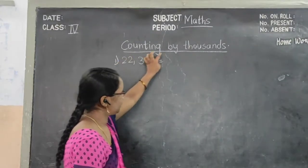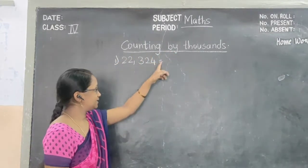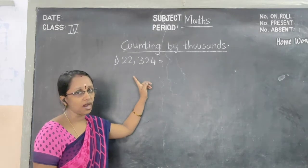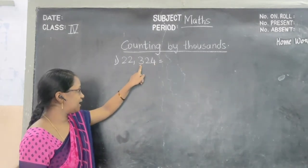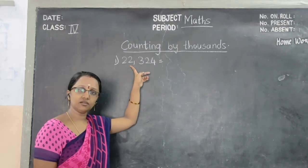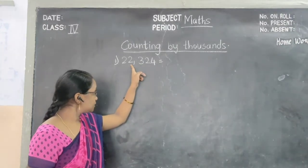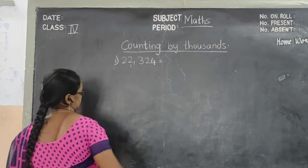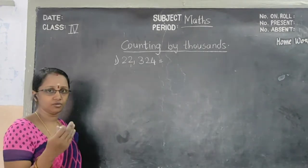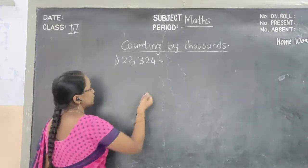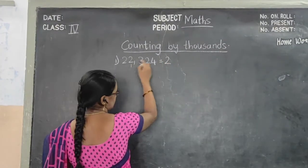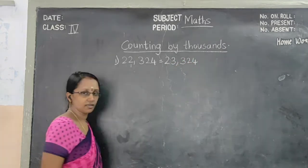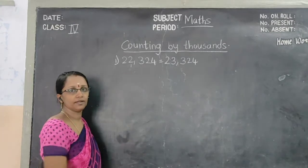Now what is our task? Counting by 1000's. So we look at the 1000's place. The number in the 1000's place is 2. To that only we are going to add one more number — plus 1. They said to write the next number after 22,324. So counting by 1000's, what number comes next? 23,324. Remaining all numbers will be the same; only in the 1000's place the number will be changed.